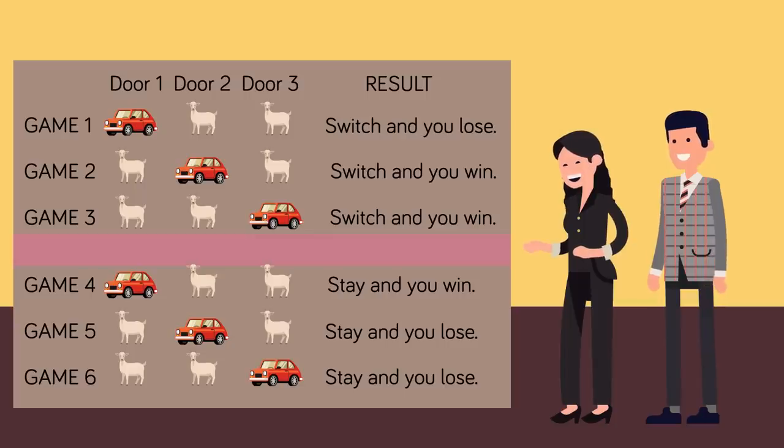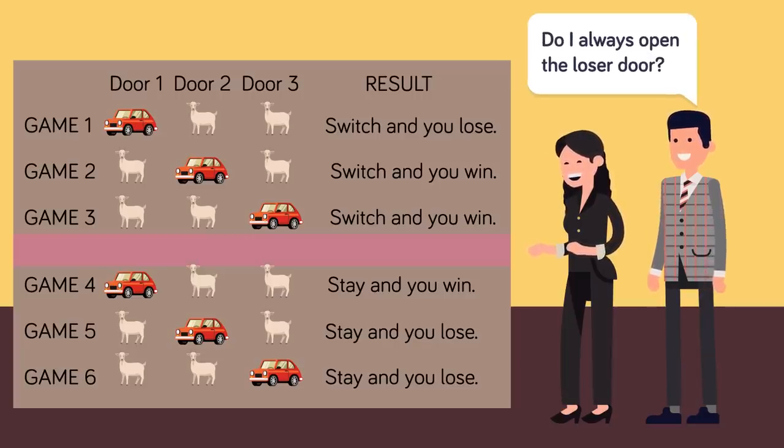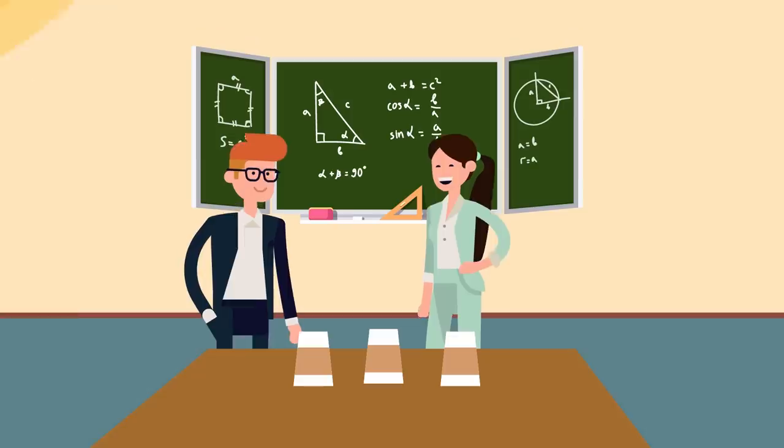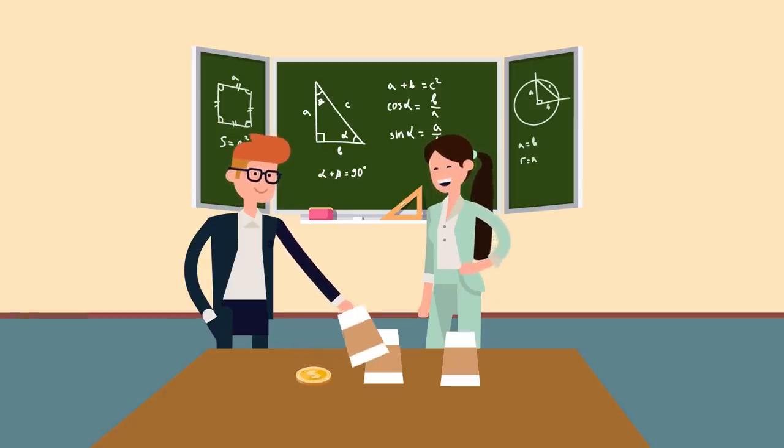But vos Savant did not back down. She defended her answer in additional columns. She presented her critics with the following table, showing what she called the benefits of switching. The first three games show that you win two-thirds of the time if you switch, while the second three games show that you win one-third of the time if you stay. However, these results are based on the assumption that the host always opens a loser. In one of her columns, she also urged students in math classes throughout the country to perform a probability experiment that would test her thinking. It involved three paper cups, a penny, and a die. This approach worked. After conducting the experiment, many people became convinced that her solution was the correct one.